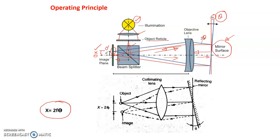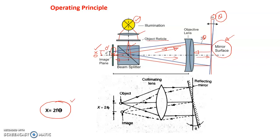We can then construct an equation: x = 2θ × f, meaning x is a function of the focal length and the angle of deflection theta. From this equation, we can find the value of theta if we know the value of x.